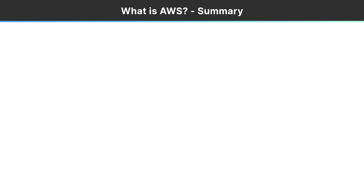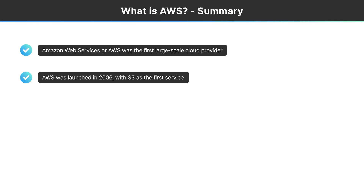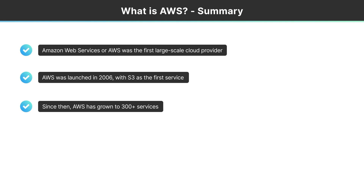So, what is AWS? If cloud computing is the on-demand consumption of IT resources, know that AWS was the first large-scale cloud provider — they pioneered on-demand delivery of IT resources. They're arguably the largest and definitely have the largest market share, making it a great place to start for certification. AWS was launched in 2006 with S3 as the first service, followed shortly by SQS. S3 is a storage service — think Google Drive or Dropbox. Since then, AWS has grown to 300-plus macro services with sub-services underneath.